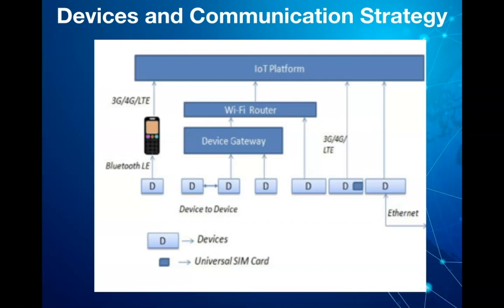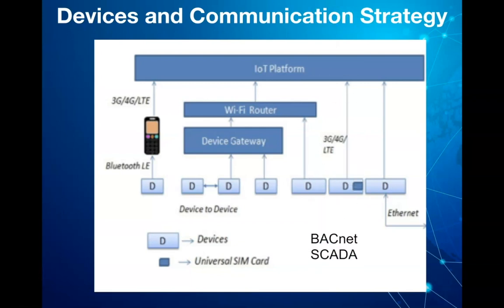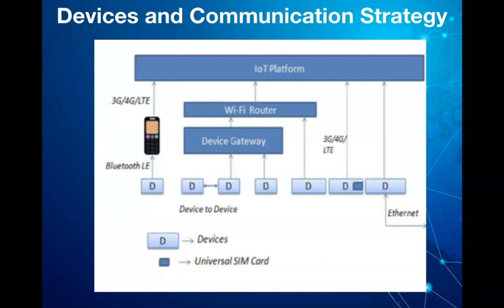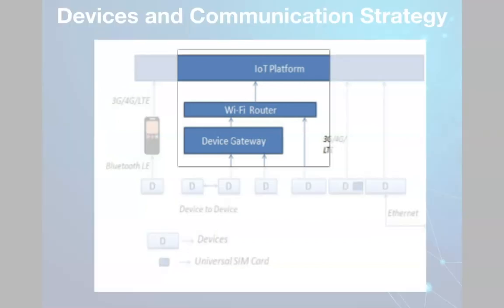Different types of devices have different networking abilities and use required protocols like MQTT, CoAP, or industry-specific protocols like BACnet and SCADA to provide data to the core platform layer. Some devices may have the ability to directly connect to the internet, like a cell phone, or may use a device gateway to connect to the core platform layer.